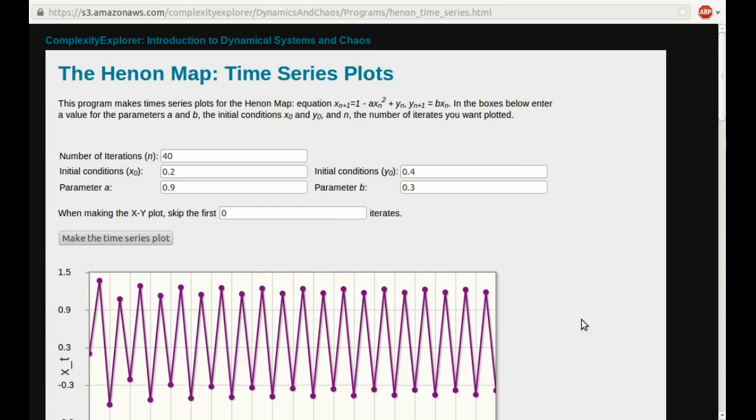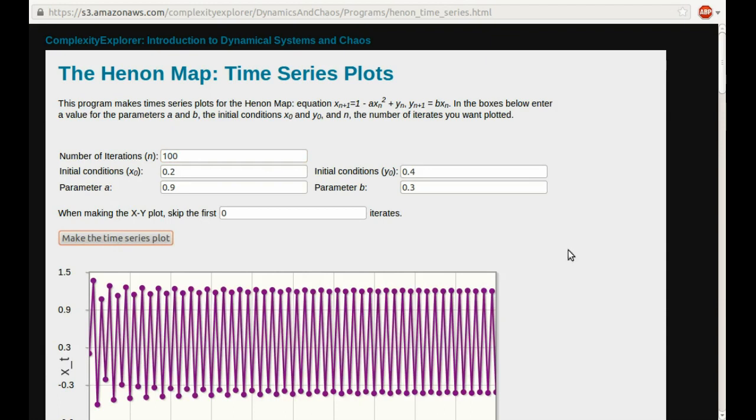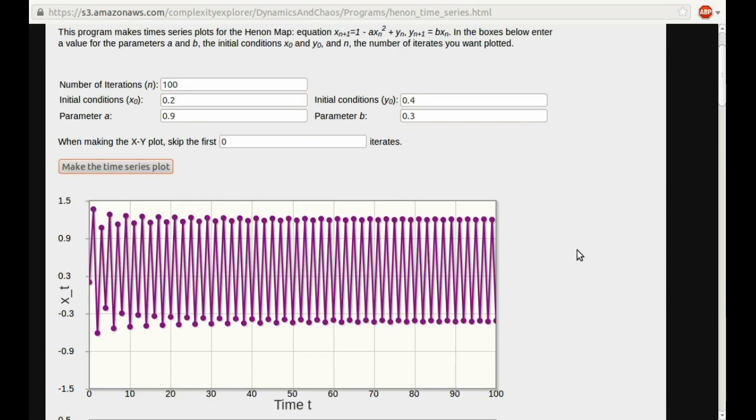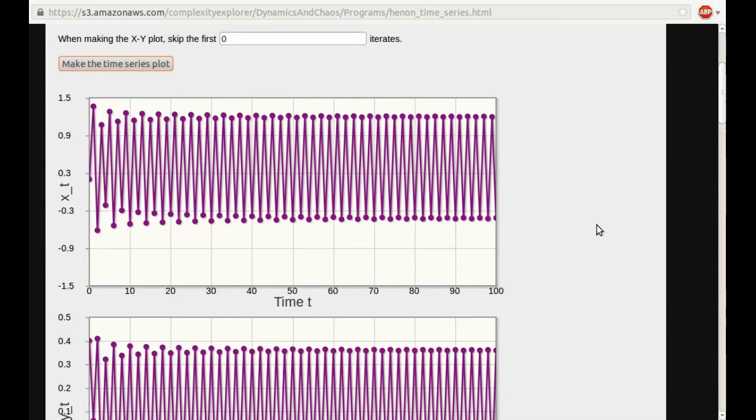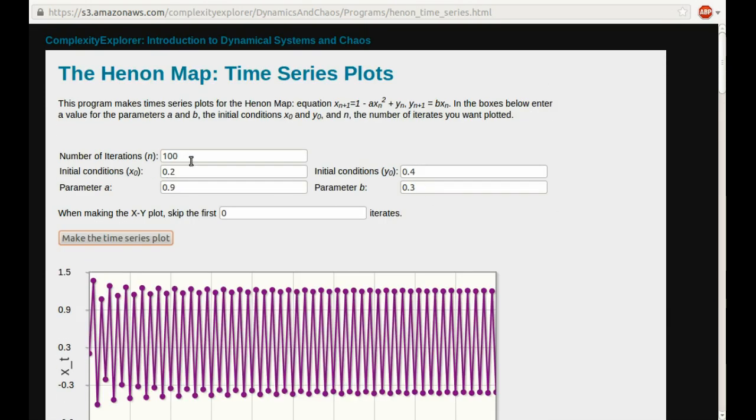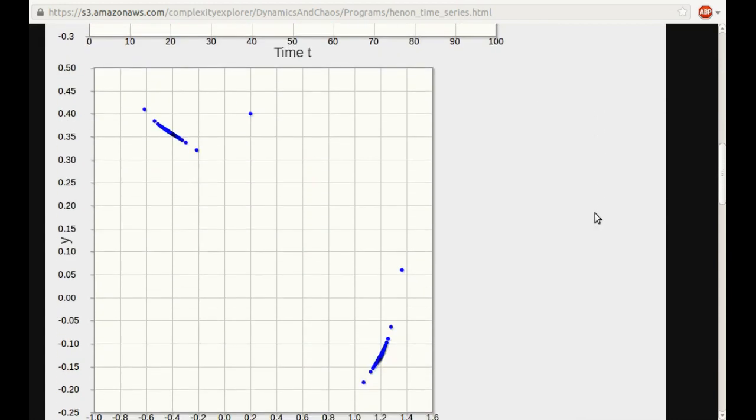Often in dynamical systems, we're interested just in the long-term behavior of the system. So it kind of looks like this is going to something that's periodic. Let's kind of test that out. Maybe I'll plot 100 iterates to make the time series plot. And it does indeed look like it's becoming almost, maybe it's period 2, maybe it's period 4. It's a little bit hard to tell.